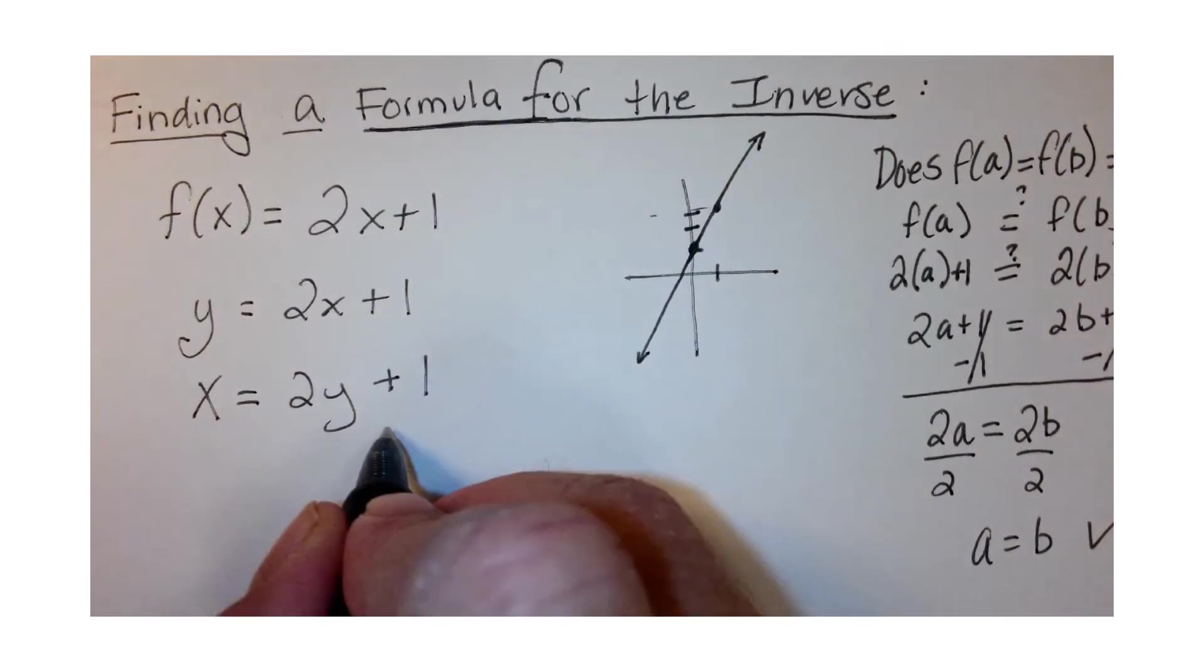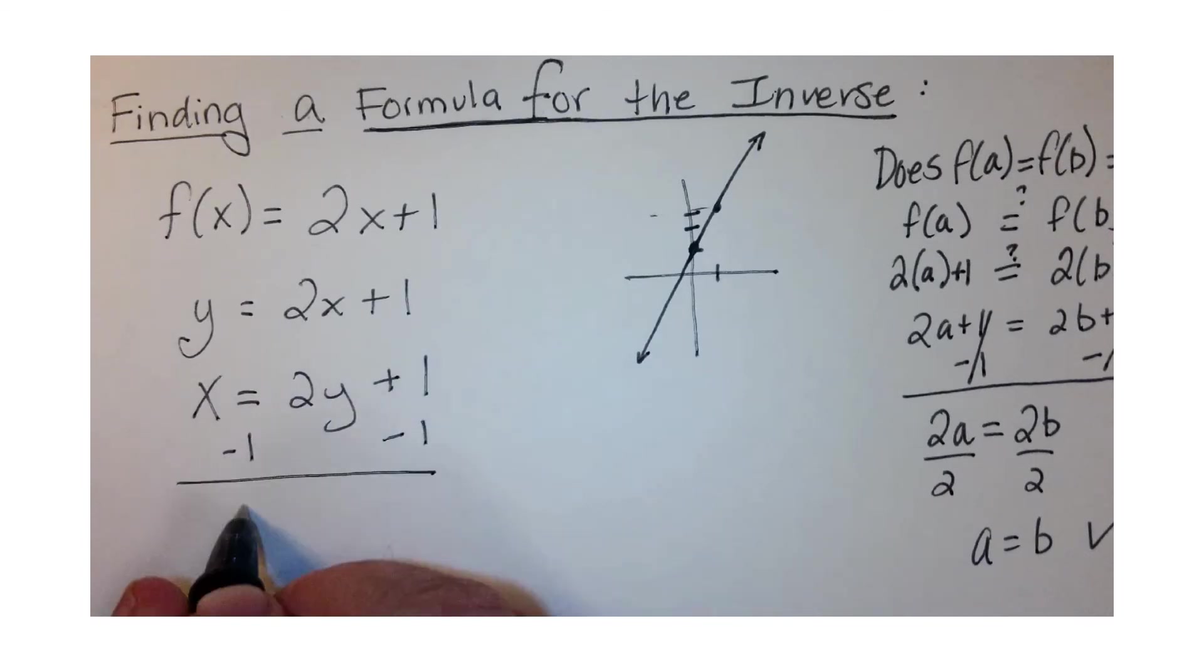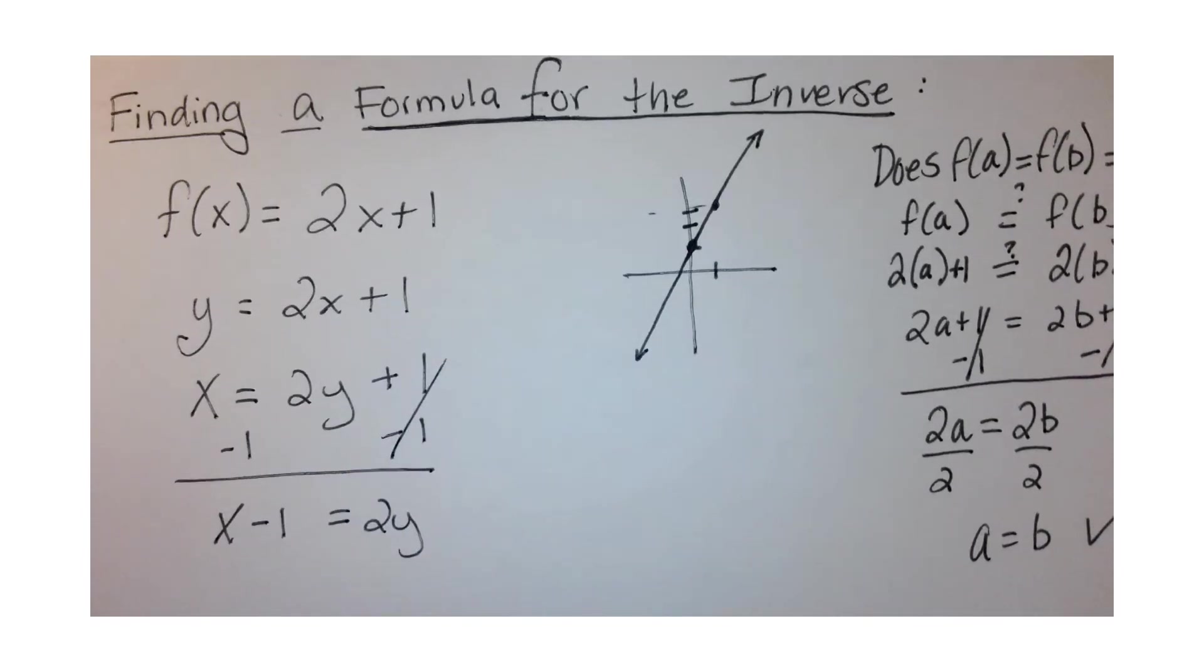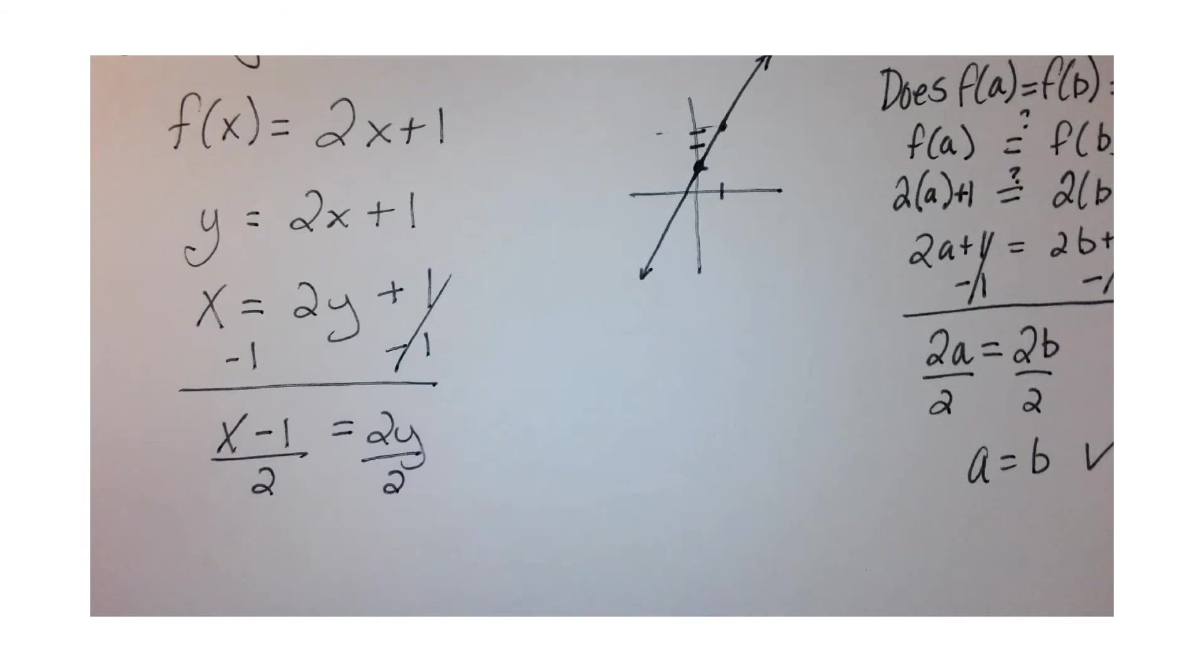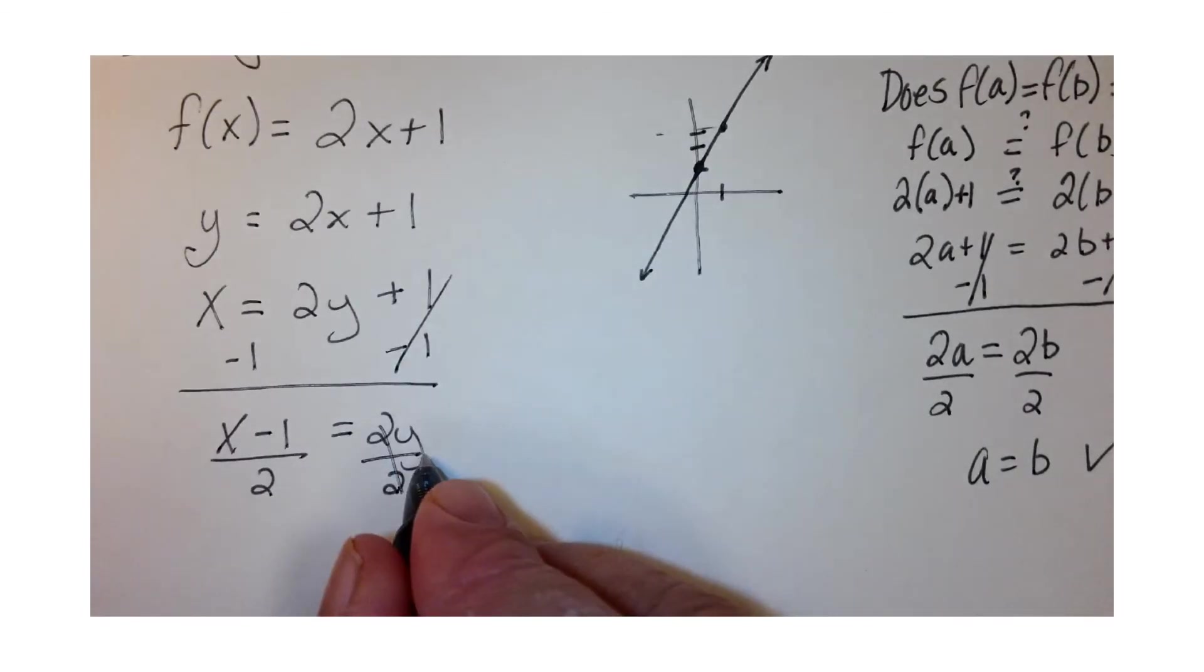So we have x - 1 equals 2y, and that cancels. Then we're going to divide by 2, so when I put y on the left-hand side now, we have y = (x - 1)/2.